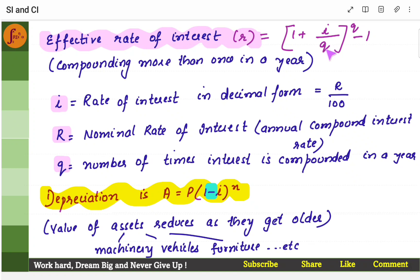For example, if I'm compounding every three months, then in a year it's going to be 4 times, because 3 into 4 is 12 months. So 4 times I'll be compounding, q will be 4. And i is the rate of interest.